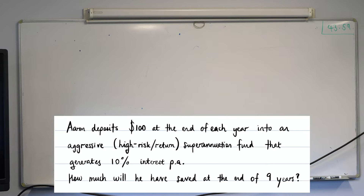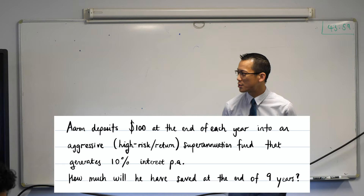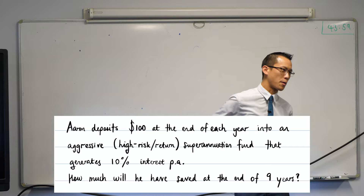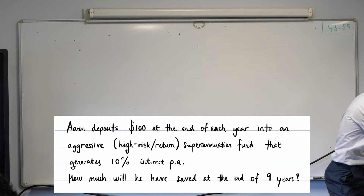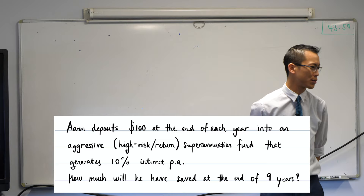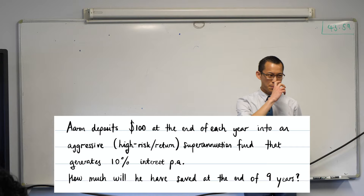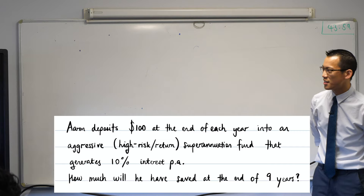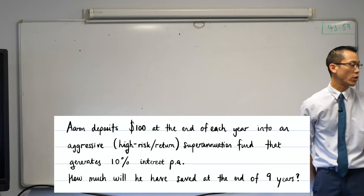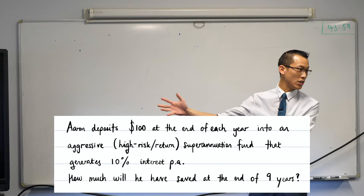Now is a good opportunity, as you're jotting down some working, to explain some of the language in the question. It's there to provide an explanation for why some of the numbers are what they are. He deposits a hundred dollars at the end of each year — as you've already noticed in previous questions, that's important. The fact that it's at the end of each year is going to have an impact on the equations that you form.